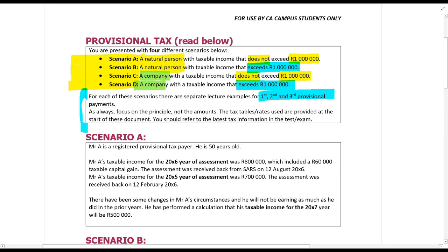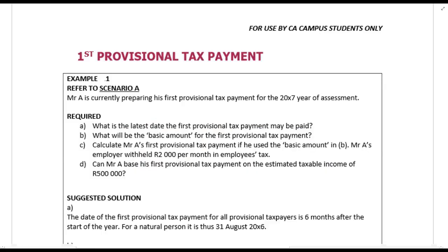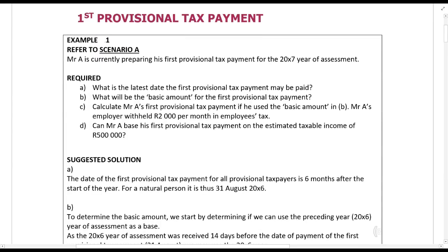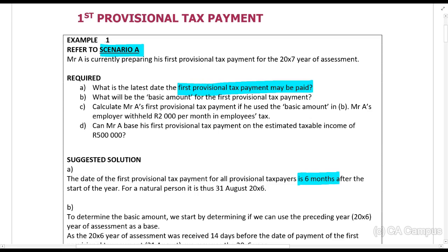First provisional tax payment, Example 1 — refer to Scenario A. Mr. A is currently preparing his first provisional tax payment for the 20x7 year of assessment. The latest date the first provisional tax payment may be paid is six months after the start of the year. A natural person's tax year starts on the 1st of March, so that would be the 31st of August.